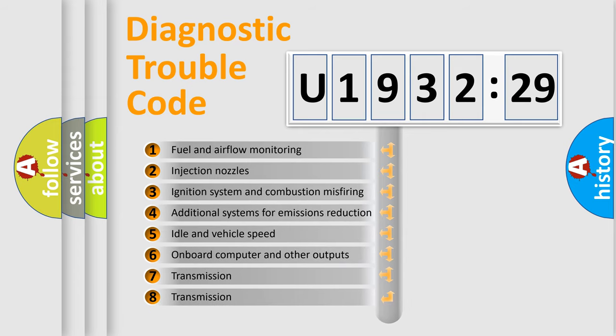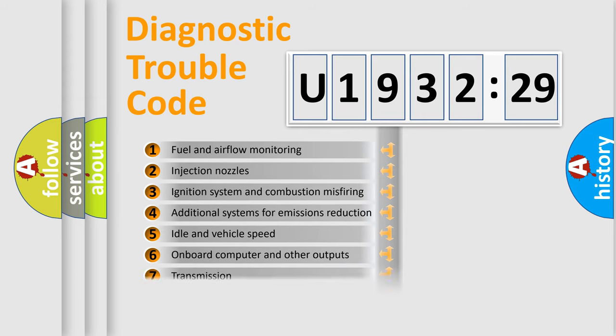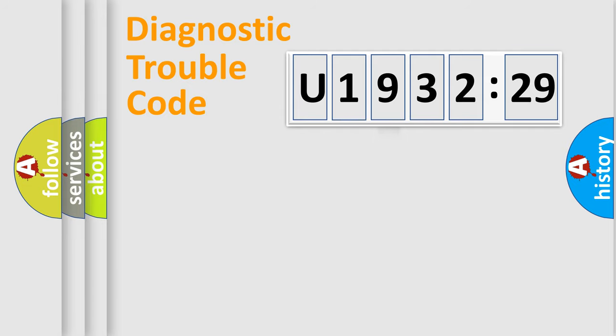The third character specifies a subset of errors. The distribution shown is valid only for the standardized DTC code. Only the last two characters define the specific fault of the group.